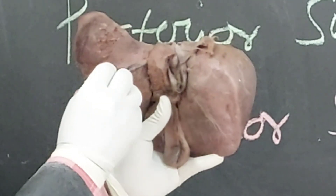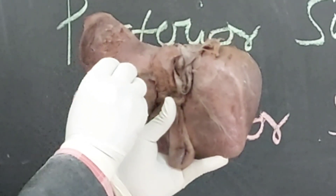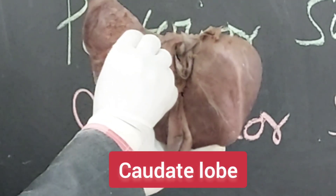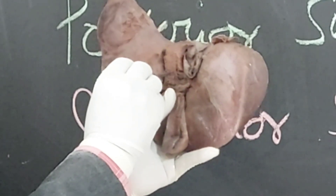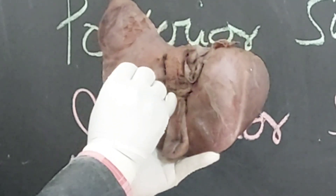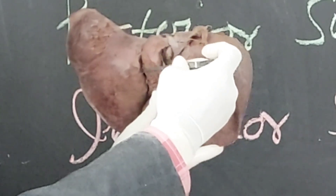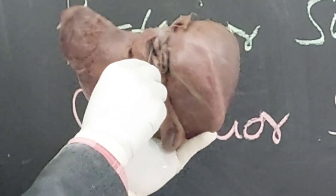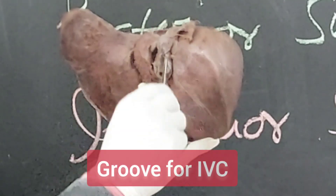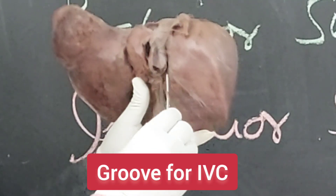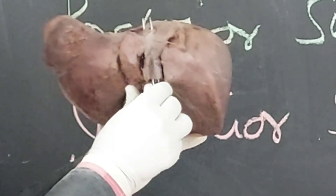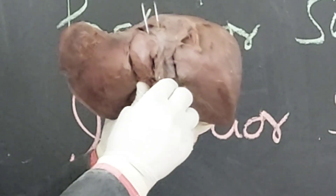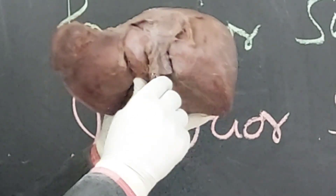Right to the fissure for ductus venosus or ligamentum venosum, it is the caudate lobe. It is having two processes: the caudate process and papillary process, but these two processes we will get on the inferior surface. Only the caudate lobe I will get on the posterior surface. Then right to the caudate lobe, here is a groove. That groove is for the inferior vena cava. This groove indicates the position of the inferior vena cava.